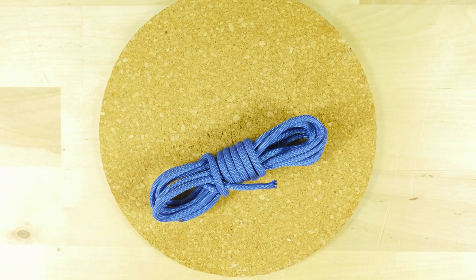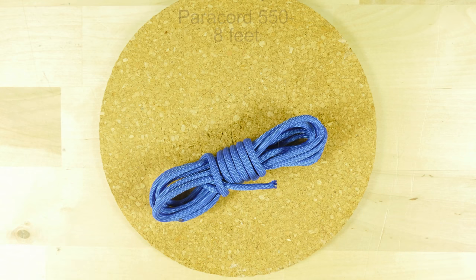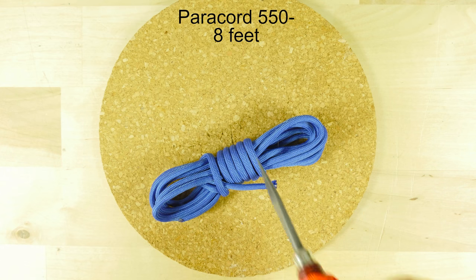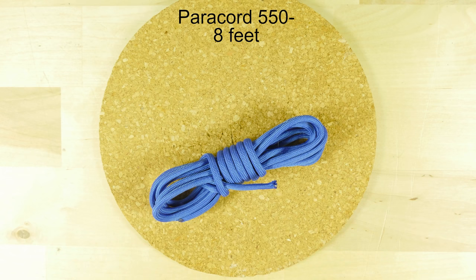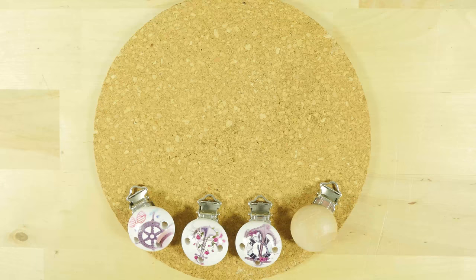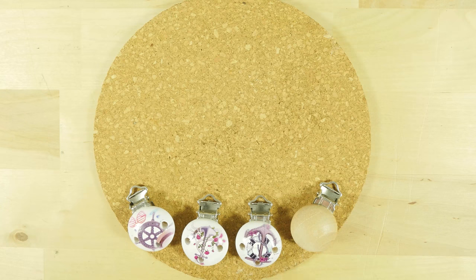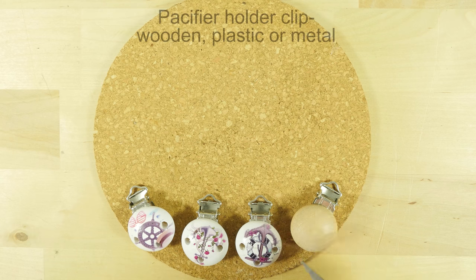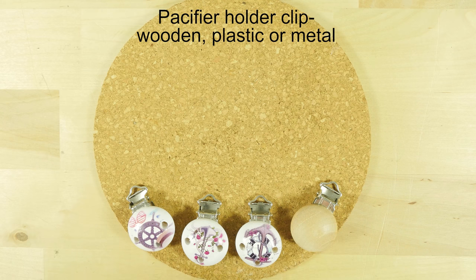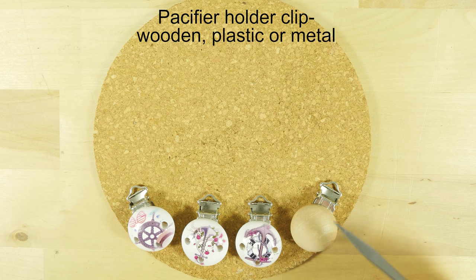Now for the supplies, the first supply that I'm going to be using is a piece of paracord 550. This one is going to be about 8 feet long, which is going to be enough for a 9 inch long pacifier holder. The next item that you're going to need is a pacifier holder clip. These clips can be made out of wood, out of plastic, or out of metal.